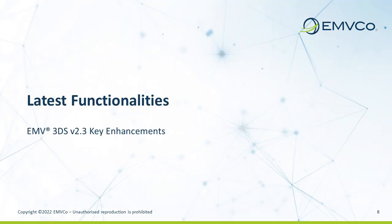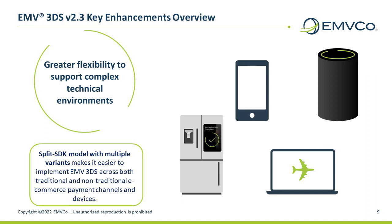The latest update to the EMVCo 3DS specification is version 2.3. It was originally published in September 2021, following approval of its release by EMVCo's Board of Advisors. I will first cover at a high level the types of changes made, and then look at some examples of these enhancements in more detail.